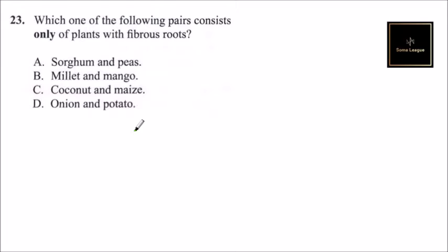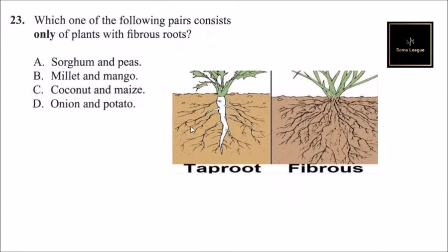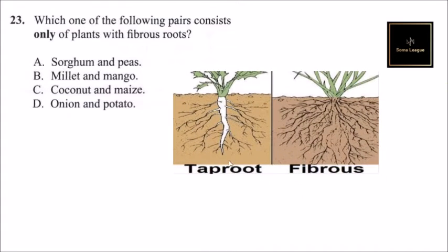Question number 23: which one of the following pairs consists only of plants with fibrous roots? Fibrous is the opposite of a tap root system. We can have a diagram showing that — this is a tap root system, and this is a fibrous root system.